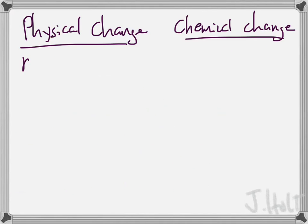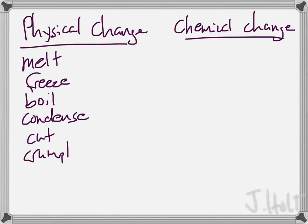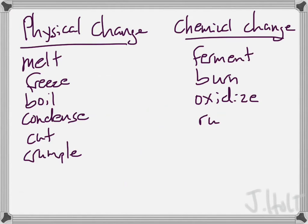Physical changes versus chemical changes. A physical change is going to be something like any phase change, or physically crumpling something. Chemical changes are changes that actually change what your compound is — you have different products after the change. That would be like fermentation, burning, oxidizing, or iron rusting.